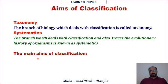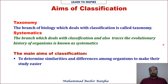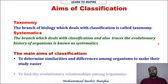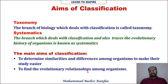The aims of classification are: number one, to determine similarities and differences among organisms to make their study easier. Number two, to find the evolutionary relationship among organisms — to determine which organism evolved from which. These two aims essentially come from the definition of classification itself.